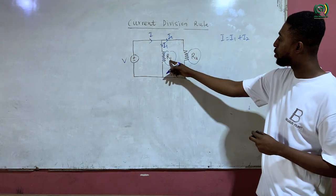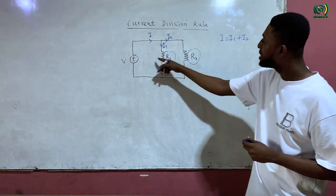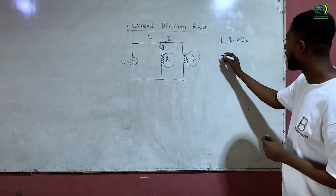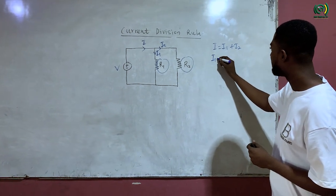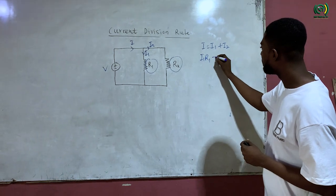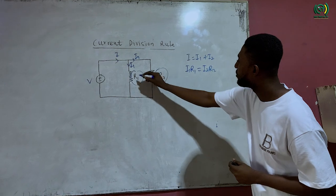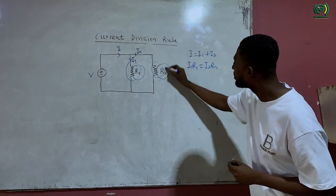Then since they are connected in parallel, it means they have the same voltage. So here I can also write I1 R1 equal to I2 R2 because the voltage here should be equal to the voltage here.